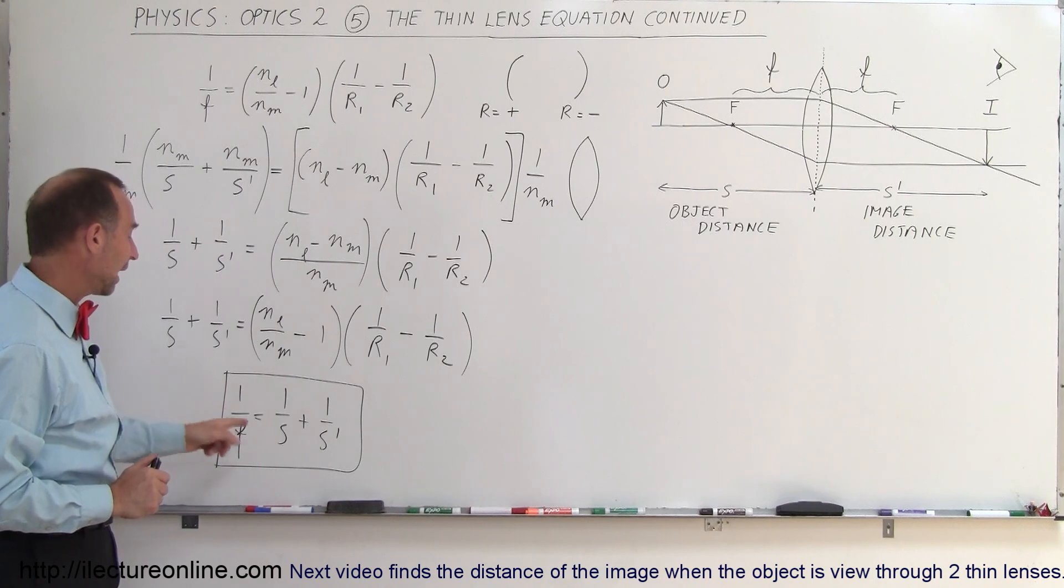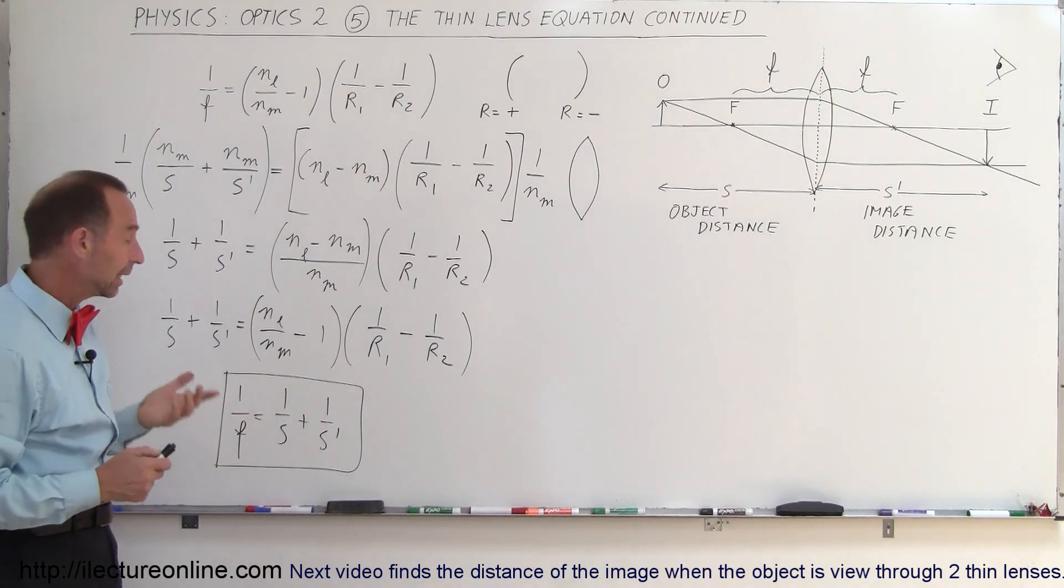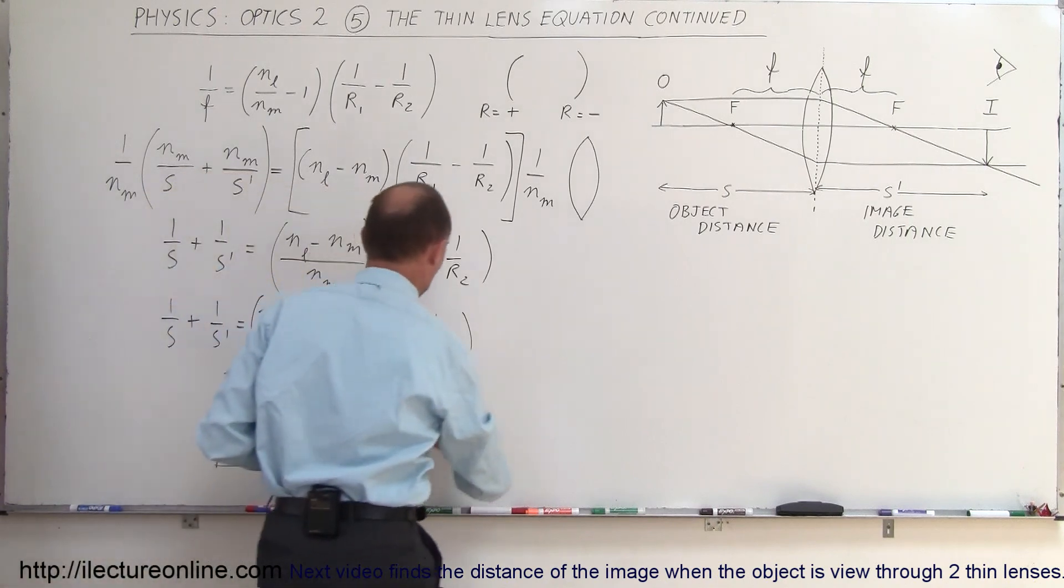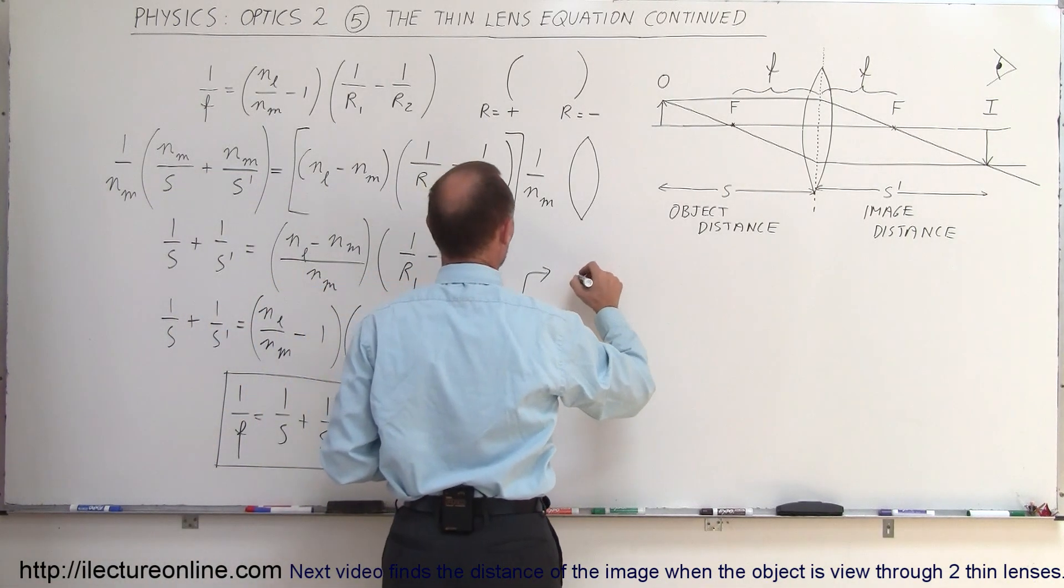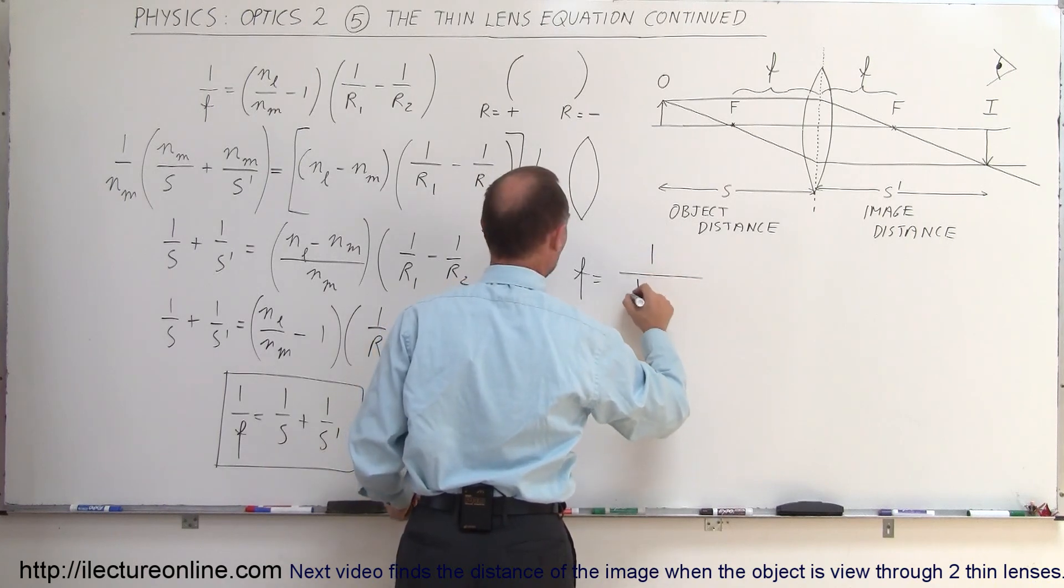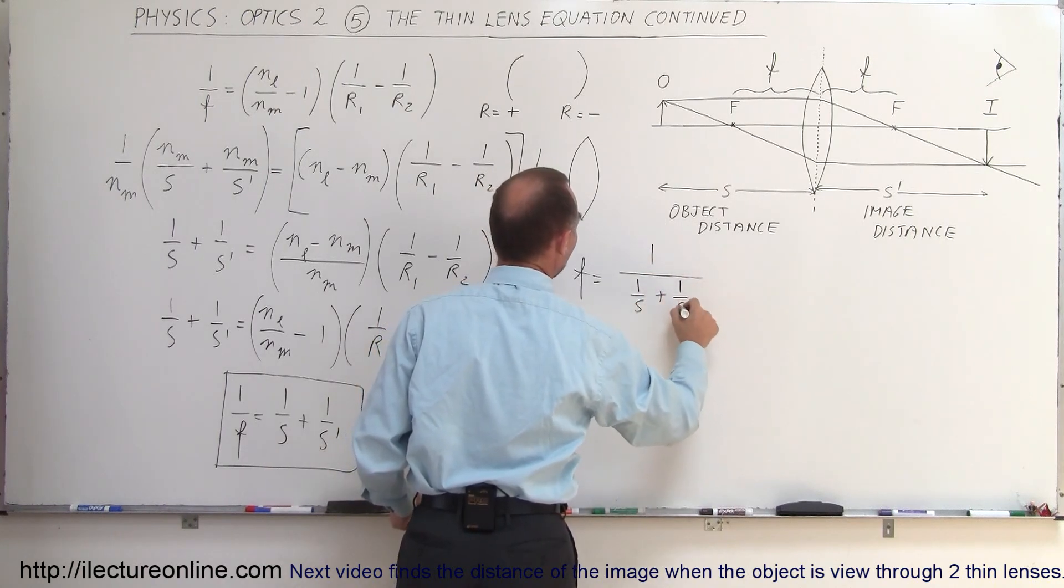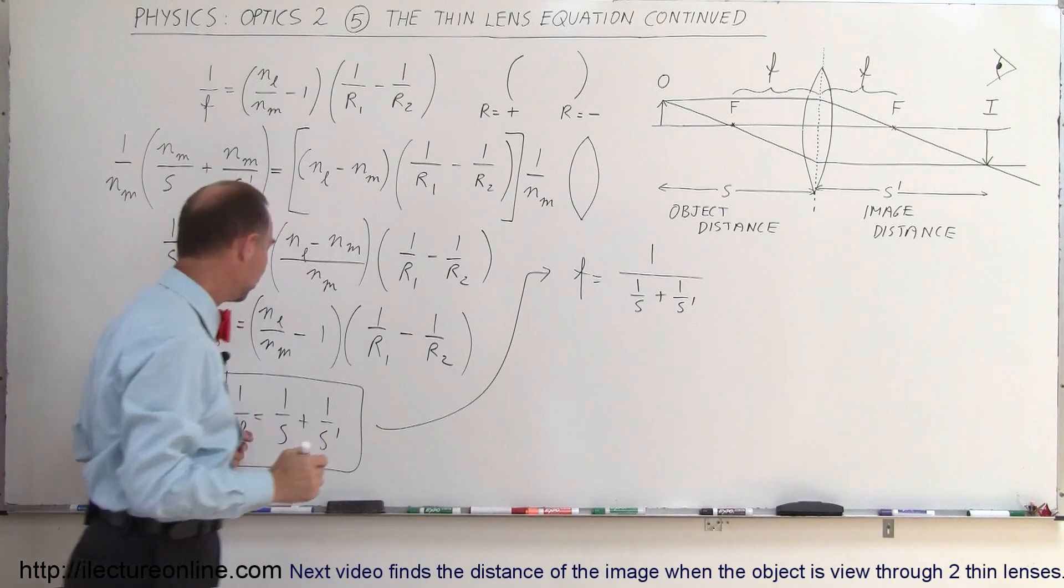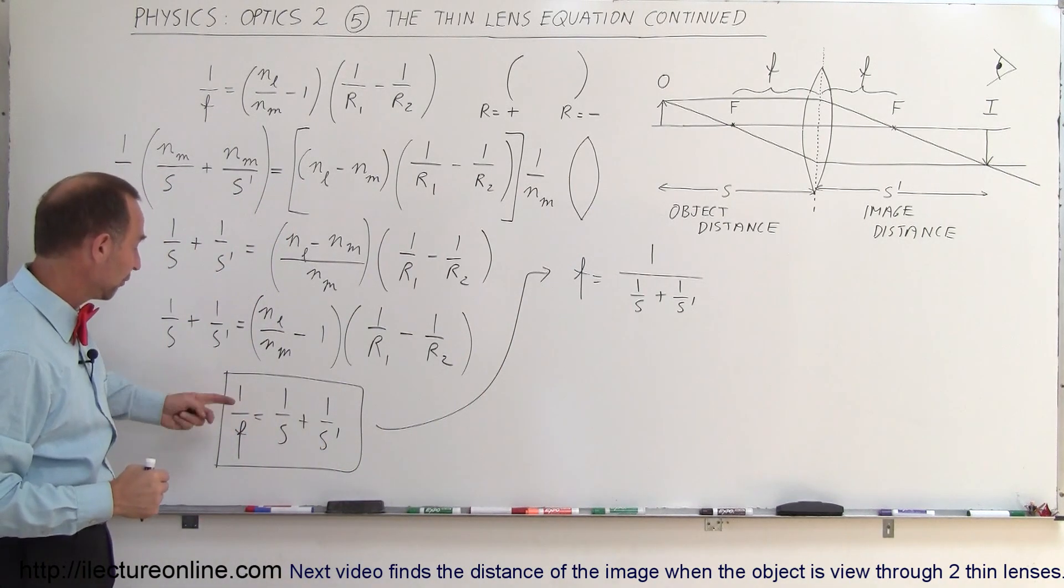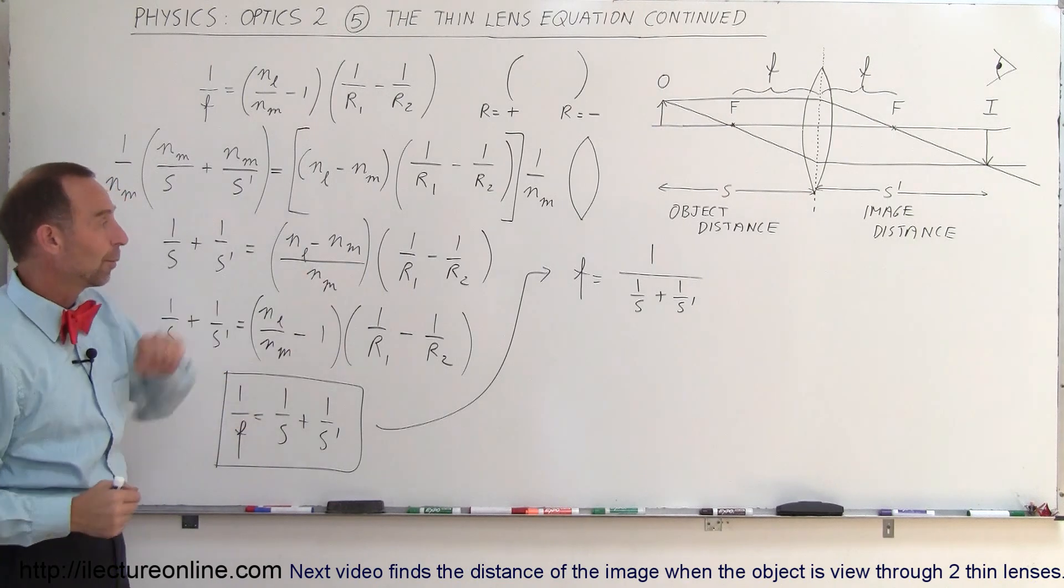Now one more thing: we can solve this for F algebraically in a different way. We can take the inverse, so F equals 1 over (1 over S plus 1 over S prime). What I've done is simply taken the inverse of both sides. The inverse of 1 over F is F, and the inverse of the right side is what we have on the board.